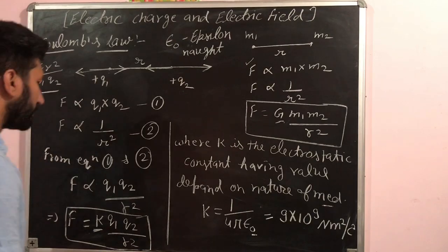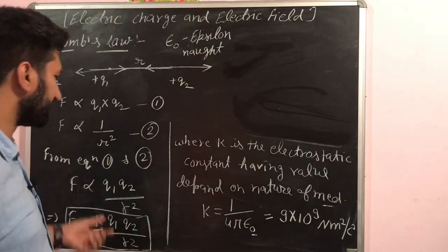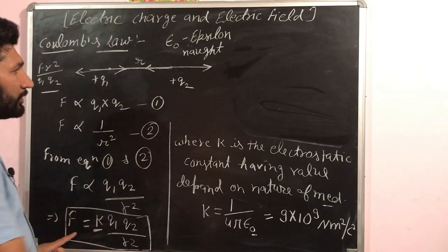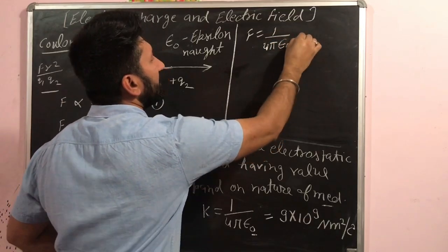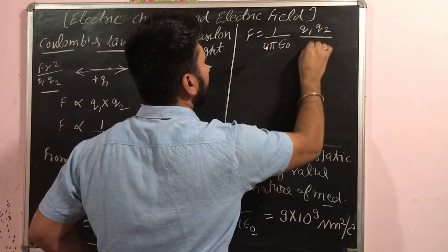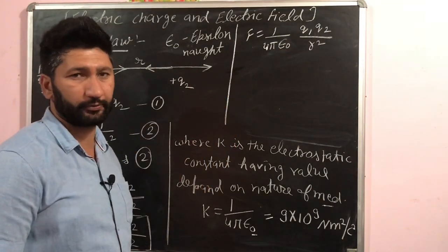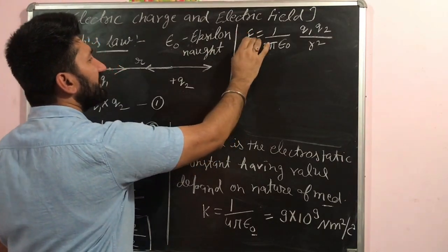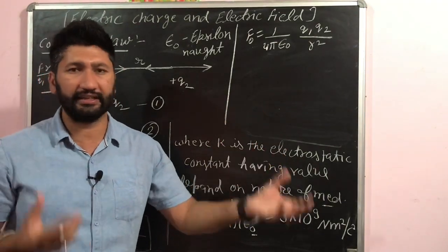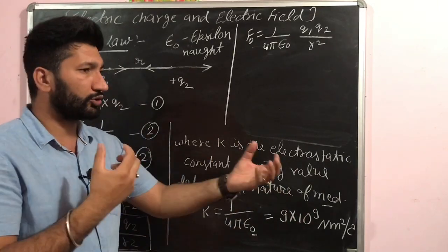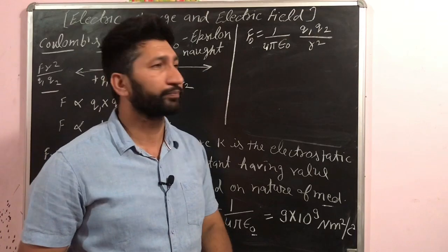Putting this k value into the formula, F = k·q1·q2 / r². For free space specifically, the force between two charges is F = (1 / 4π·ε₀) · q1·q2 / r².